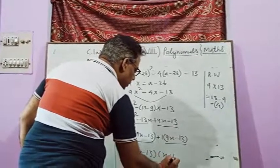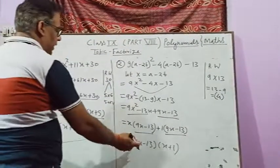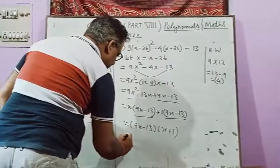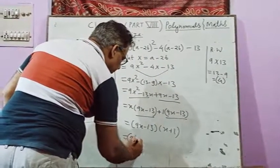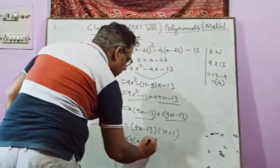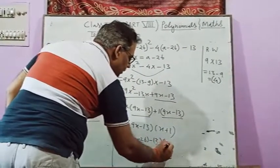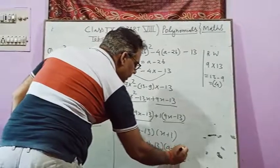And then at last, we have the value of x. So 9 into a minus 2b minus 13, and here we have a minus 2b plus 1.